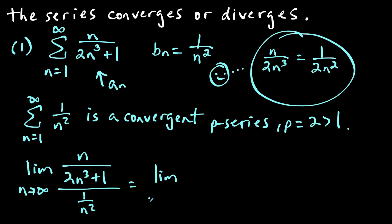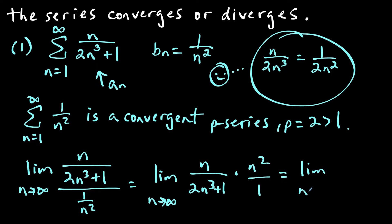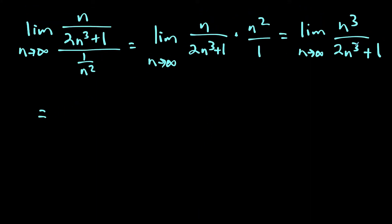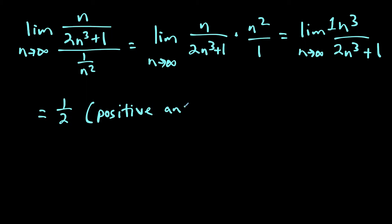Now we do a little algebra and rearrange. This is going to be n over (2n³ + 1) times n² over 1. So this becomes the limit as n goes to infinity of n³ over (2n³ + 1). Looking at the leading terms, this works out to 1/2. We note that this value is positive and finite. So by the limit comparison test, the original series also converges.